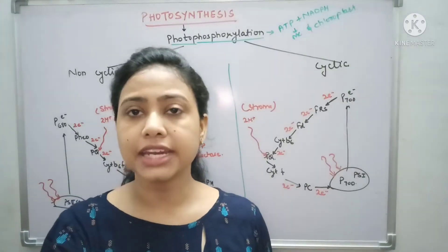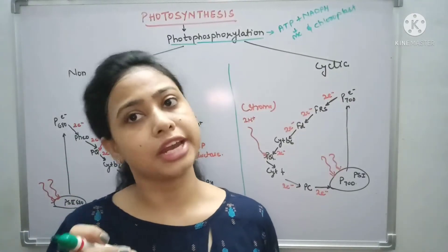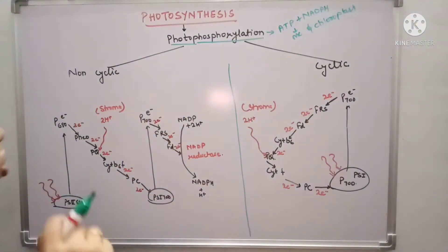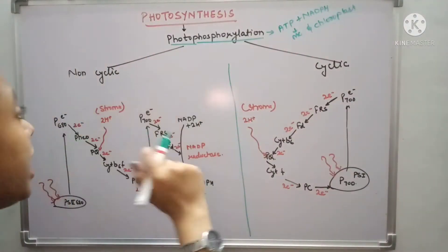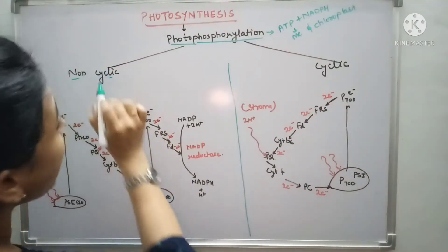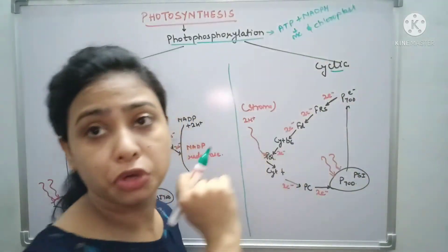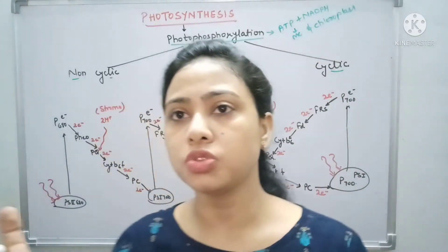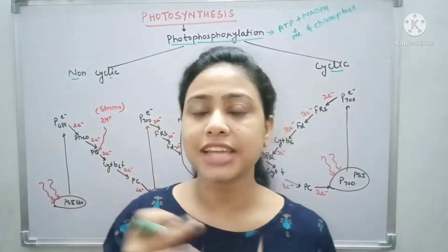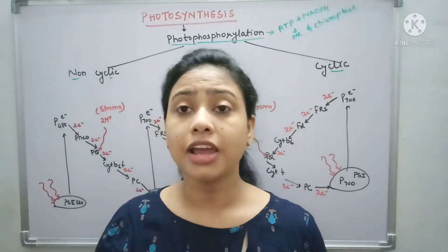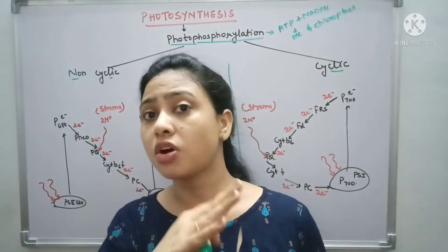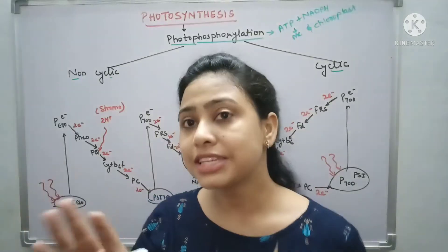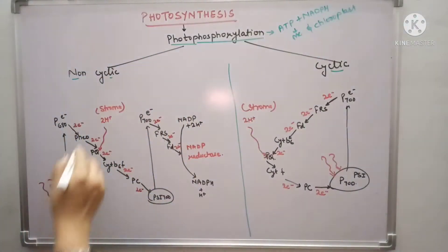Photophosphorylation means the formation of high energy molecules in the presence of light. This photophosphorylation is of two types: one is non-cyclic and the other is cyclic photophosphorylation. With the name you get an idea — cyclic means they make a cycle, and in non-cyclic there is no cycle taking place.